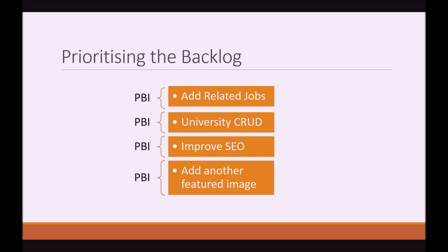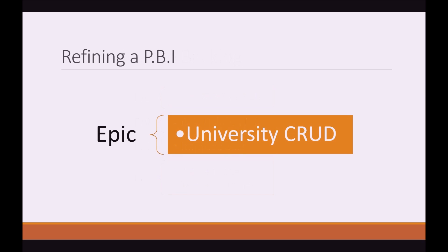We have Ad-Related Jobs and University Crud. As a Product Owner, I decide we actually need University Crud to be the first item at the top of the list. So let's move University Crud to the top of the list. Now it's time for the Development Team and Scrum Master to break down this PBI — University Crud. They've refined it into an Epic because they realize this is going to be a large task.